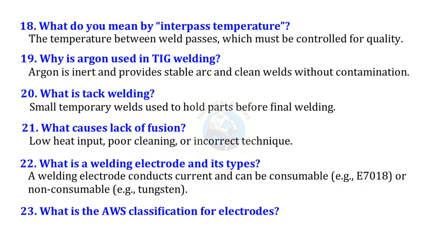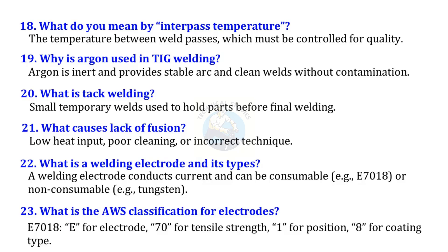What is the AWS classification for electrodes? E7018 — E for electrode, 70 for tensile strength, 1 for position, and 8 for coating type.